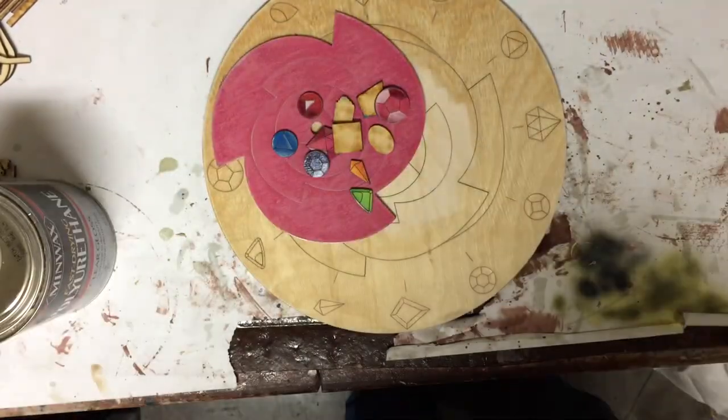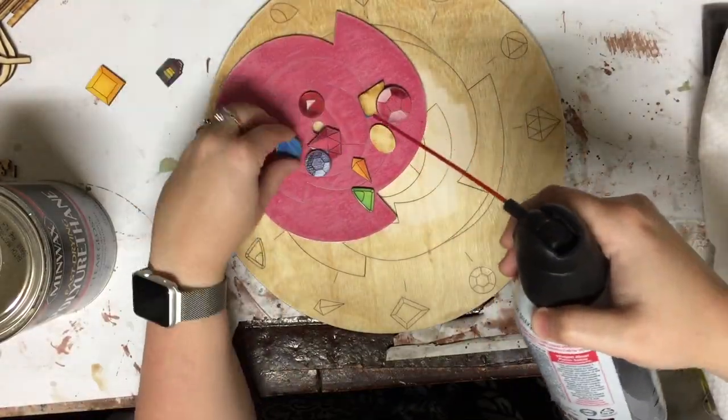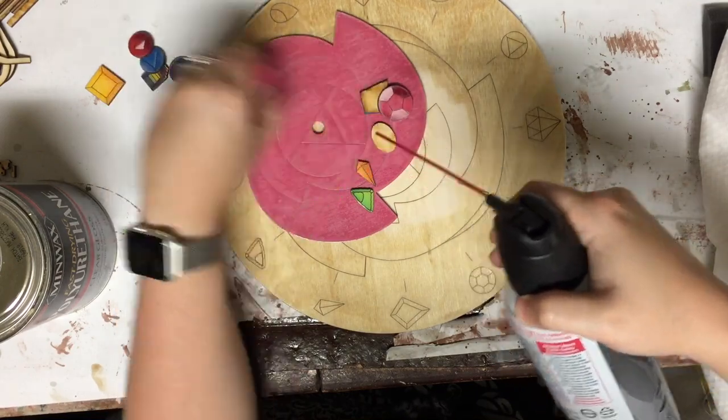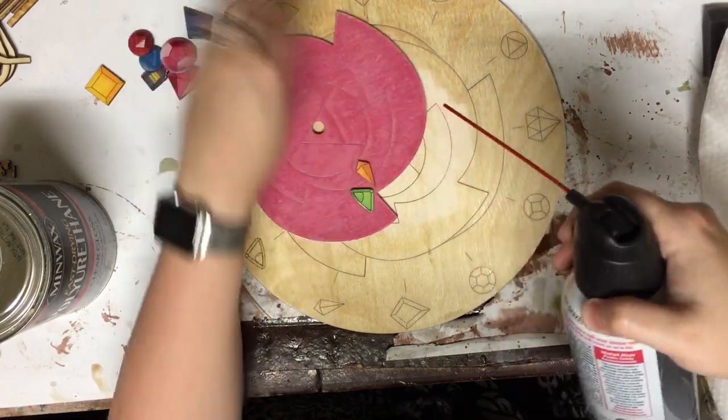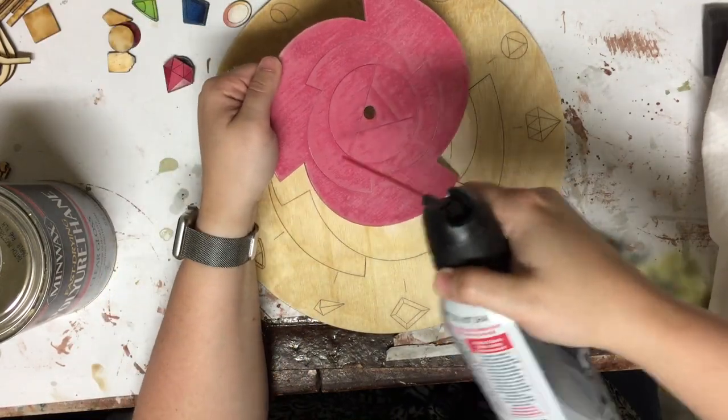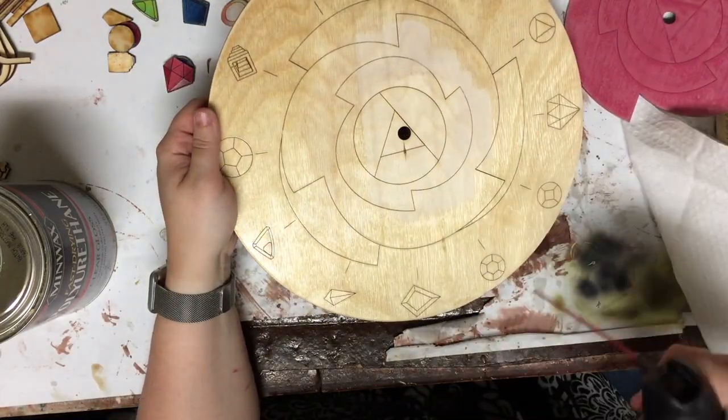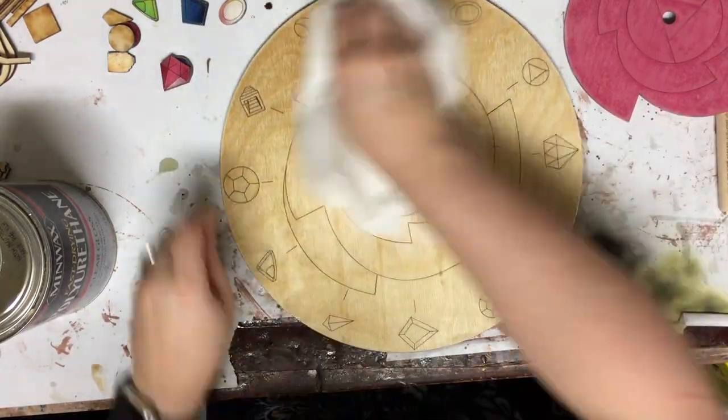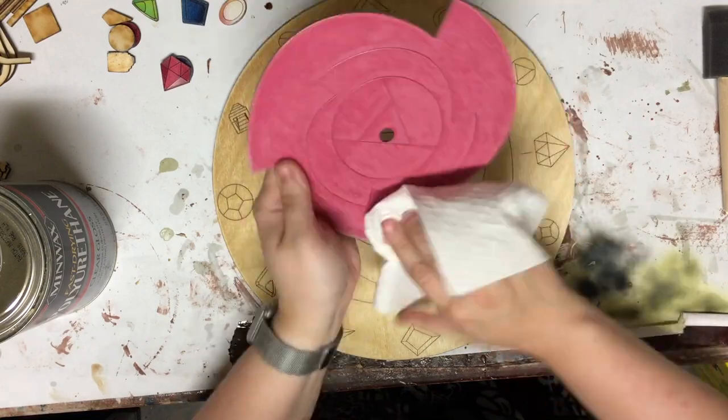Time for the second coat of polyurethane. Before that however I'm going to take a bit and try to remove as much of the sanding dust as possible. I do this both with compressed air and by just wiping it down with a paper rag. Dust and other tiny particles are the enemy of a high gloss finish.